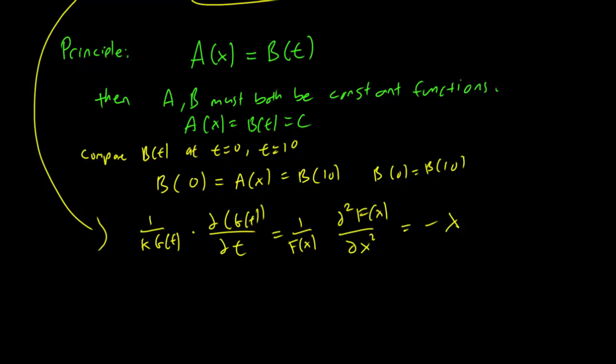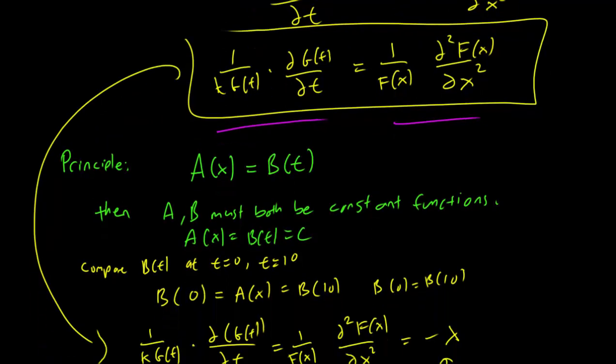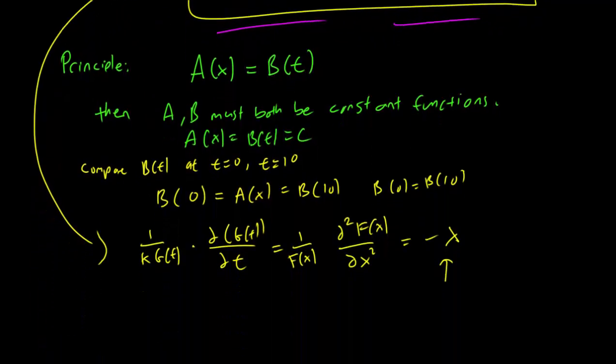But the point is that because we have a function in t set equal to a function in x, they must both be constant. So again, think about it this way. The right hand side doesn't depend on t, the left hand side doesn't depend on x. The left and right are equal to each other, so they both must not depend on t and x, so they're constant.